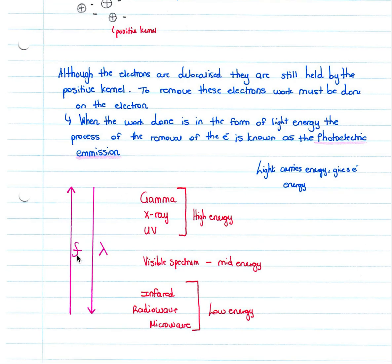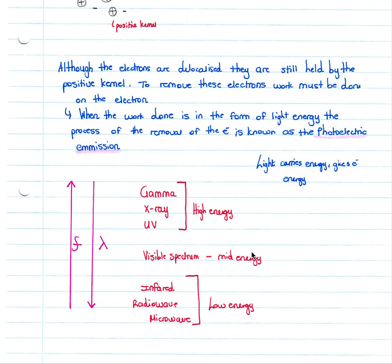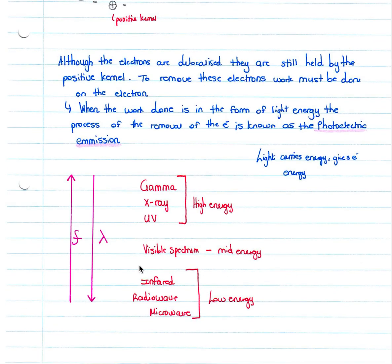When we look at frequency, F is the symbol for frequency and the other symbol is for wavelength. High frequency light — gamma, X-ray, and UV — has high frequency and high energy. Mid-energy, mid-frequency, and mid-wavelength are the visible spectrum. Large wavelength and low frequency are infrareds, radio waves, and microwaves, which are low energy. This is useful to know in terms of how frequency interacts with wavelength.